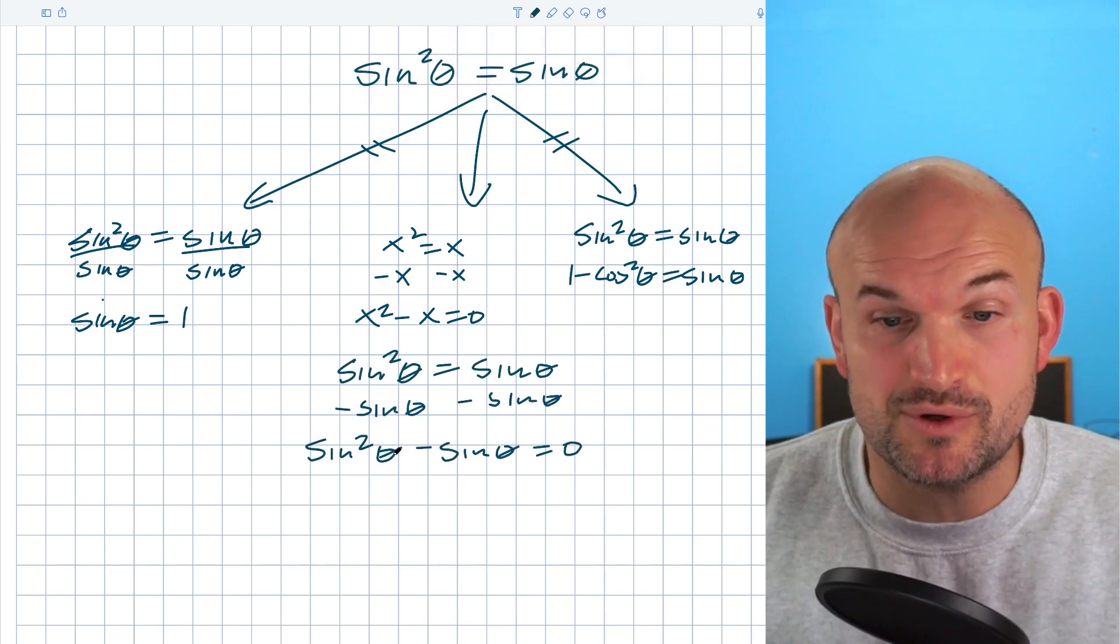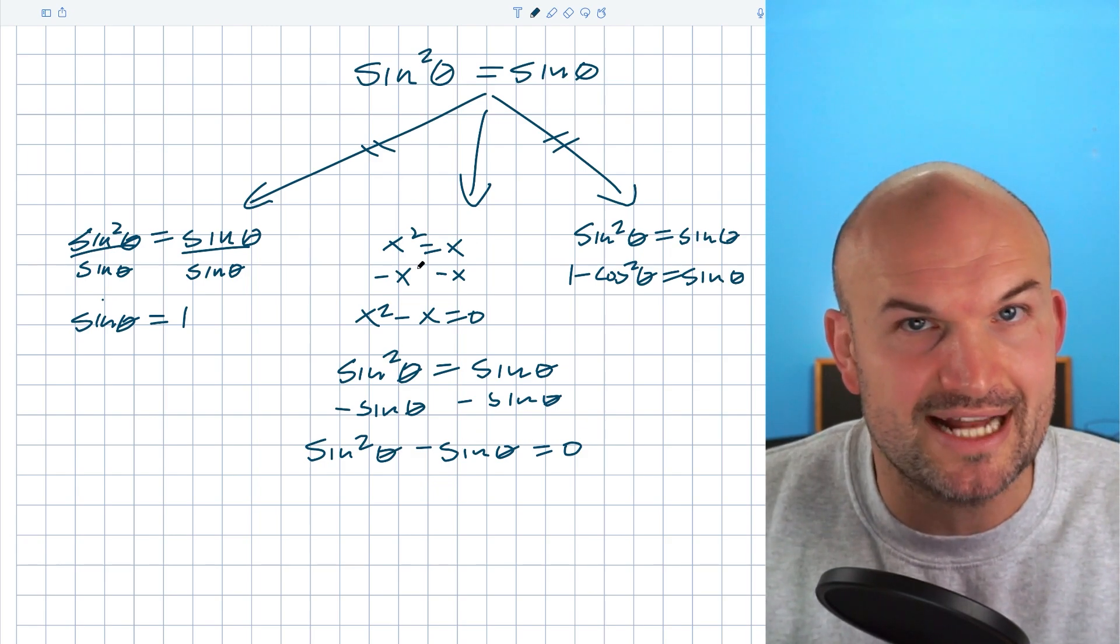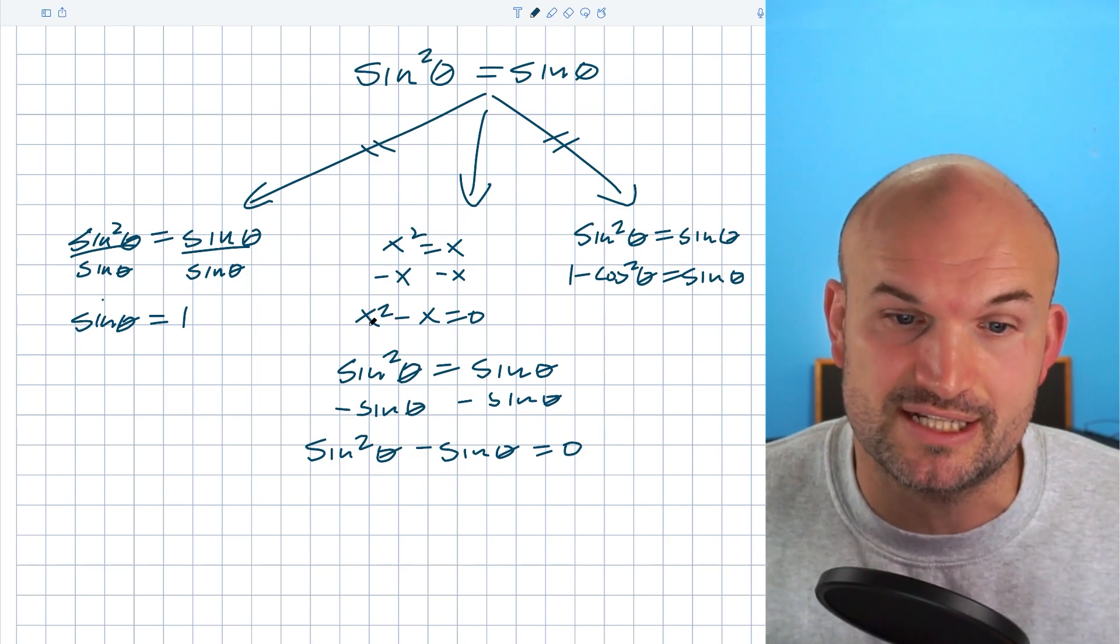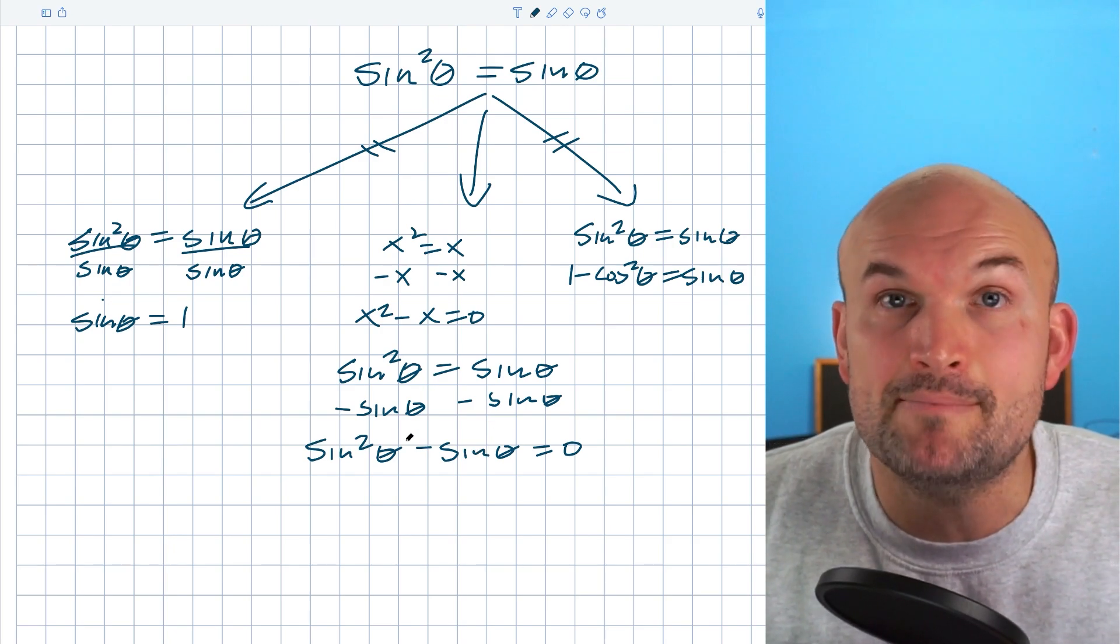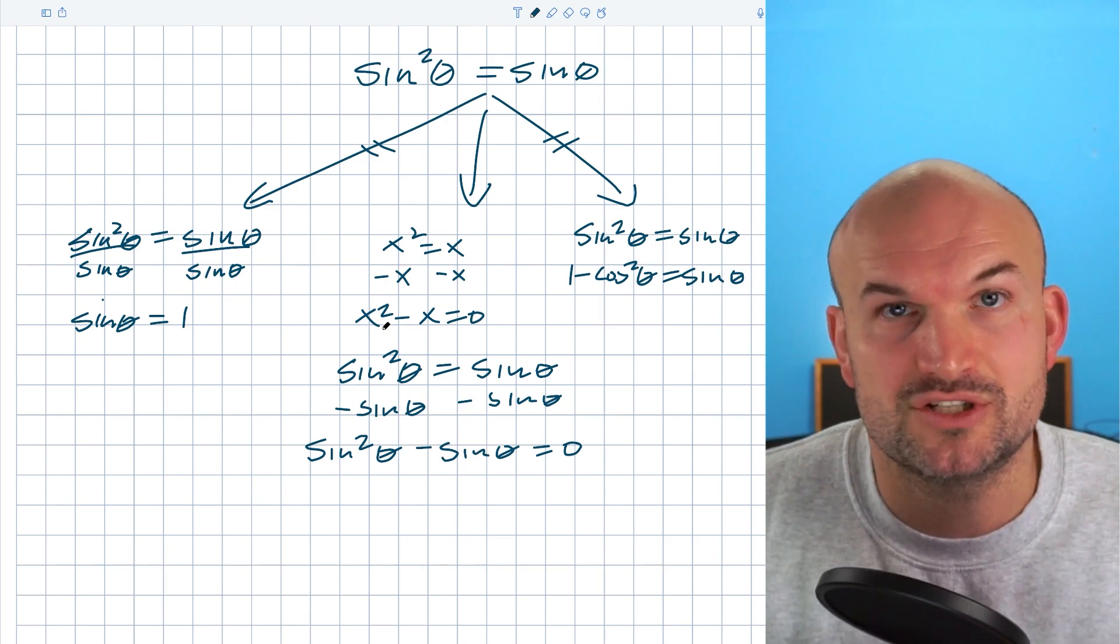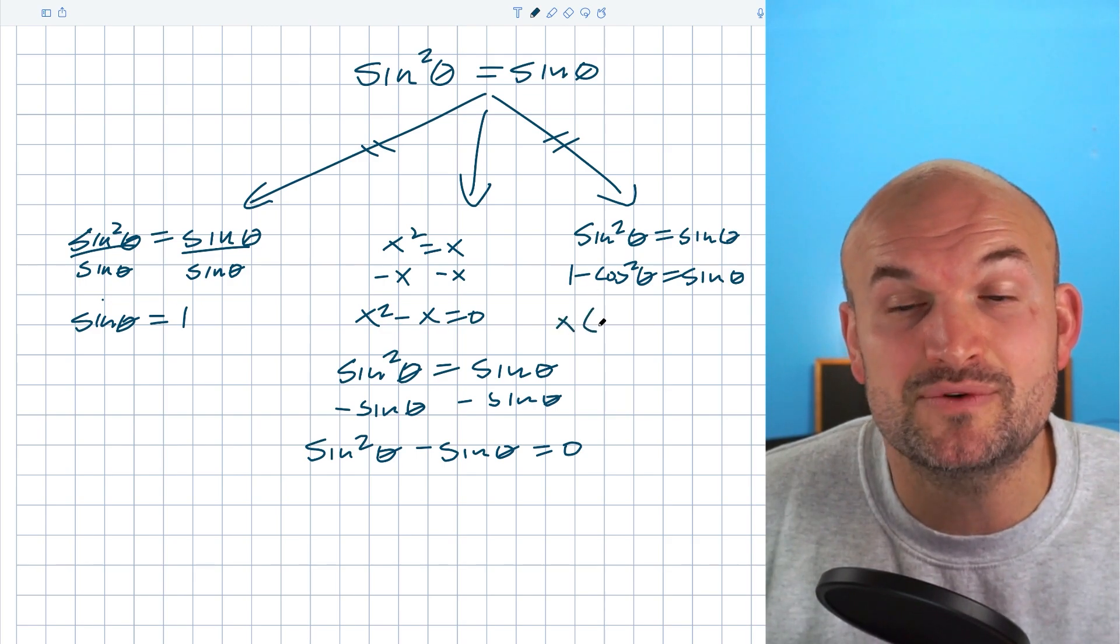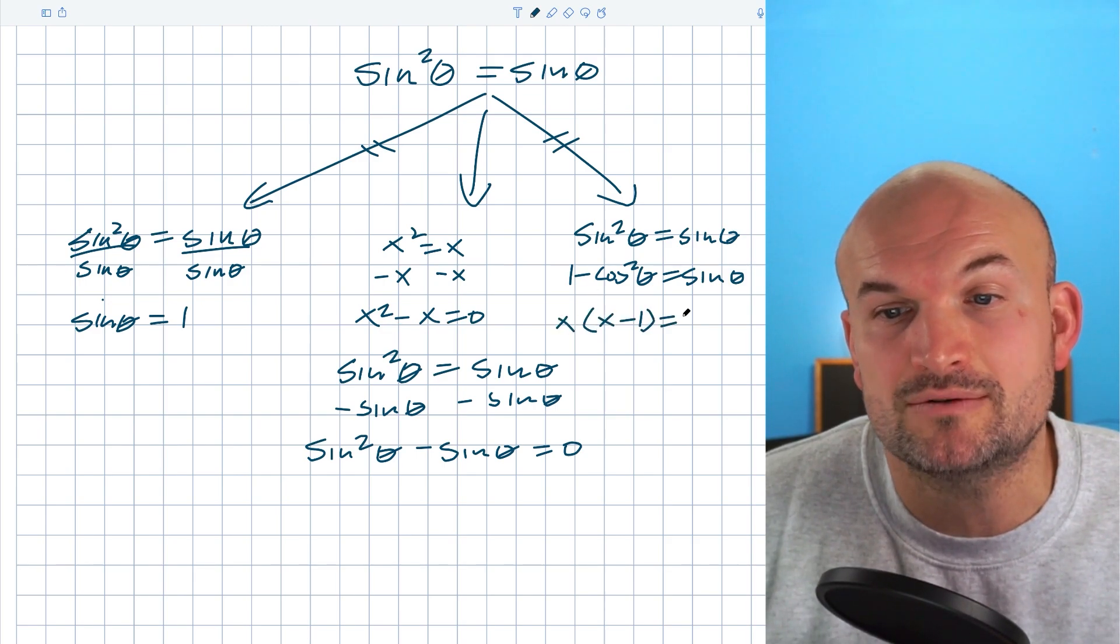Now we have sine squared of theta minus sine of theta. We cannot subtract these, they're not like terms—this is a quadratic and this is a linear term. However, what we can recognize is that they both have sine of theta in common. Just like these have an x in common, we can factor out the x to be left with x times x minus one equals zero.